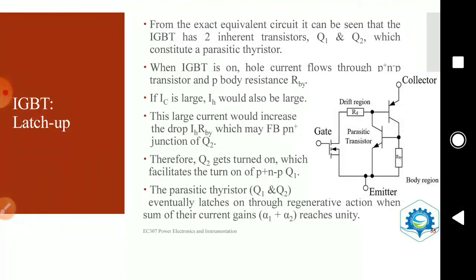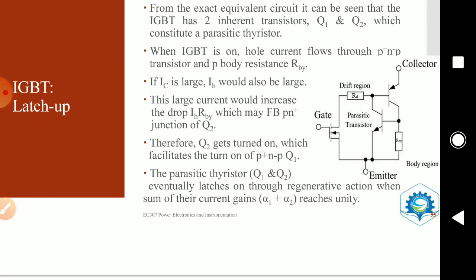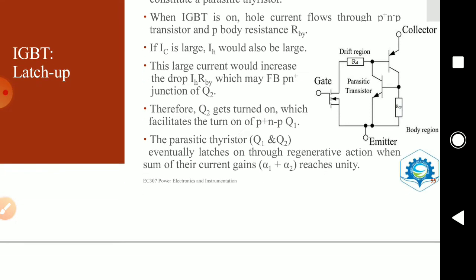Once the IGBT gets turned on or latched up, it cannot be turned off. It can only be turned off by forced commutation of the current — that is, the current flowing through the IGBT has to be forcefully reduced below a particular value. If the latch-up is not aborted quickly, excessive power dissipation will take place in the IGBT due to the presence of the body region and the drift resistance, leading to damage of the IGBT. Latch-up will occur only when the collector-emitter current exceeds a certain critical value, and we should make sure this does not happen.